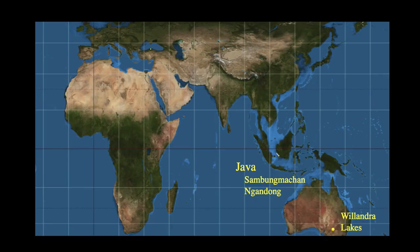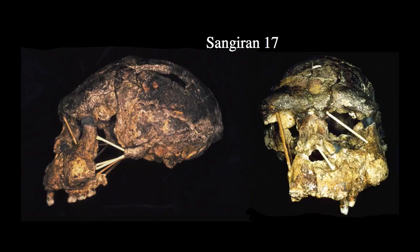Looking at the map, we'll begin with Southeast Asia. You'll see here some familiar sites on the island of Java, and we'll briefly touch on one site on the continent of Australia — Willandra Lakes. Recall that the earliest remains from Southeast Asia, specimens like Sangiran 17, that large robust male, show certain features: long sloping foreheads, a fairly low cranial vault, and a very prominent nuchal torus.